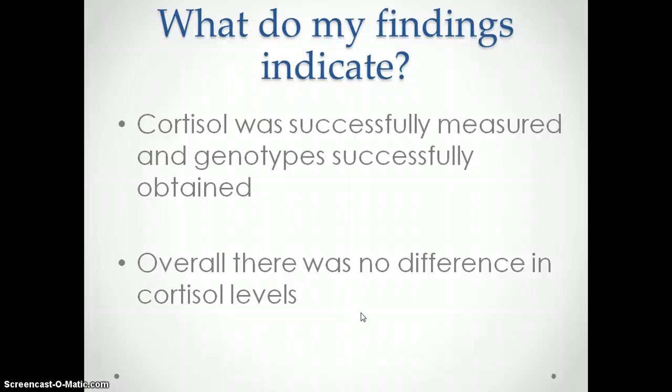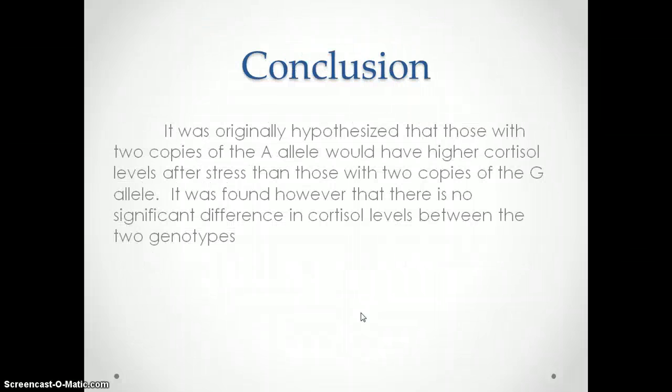My findings indicate that cortisol was successfully measured and genotype successfully obtained, but overall there was no difference in cortisol levels. I originally hypothesized that those with two copies of the A allele would have higher cortisol levels after being shown the videos than those with two copies of the G allele, but it was found that there is actually no significant difference in cortisol levels between the two genotypes.